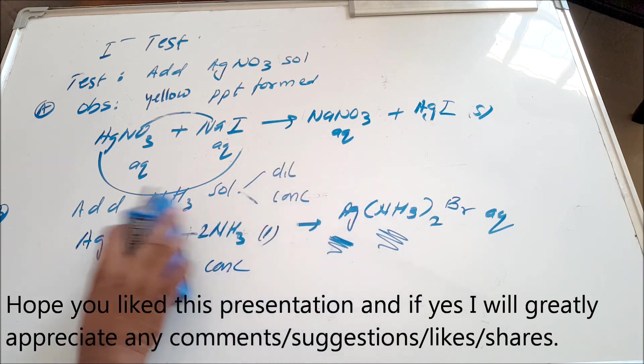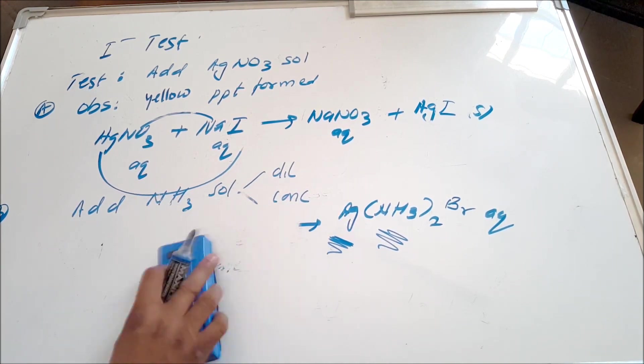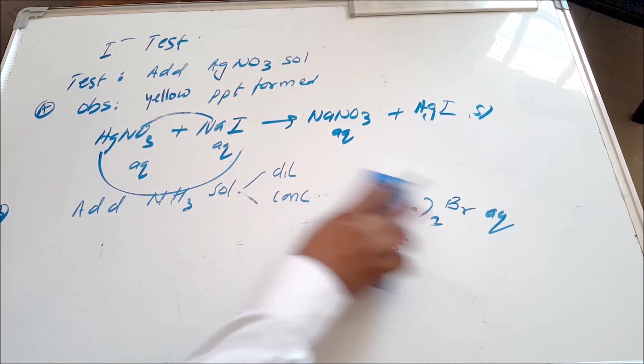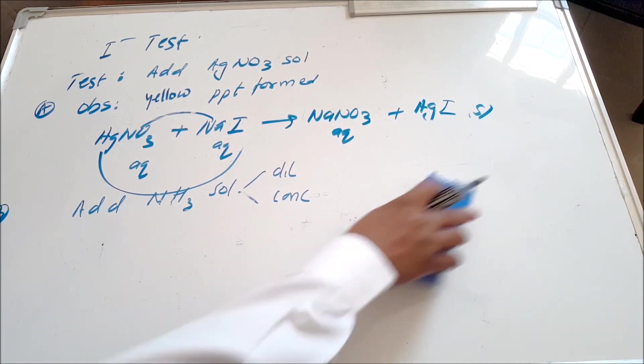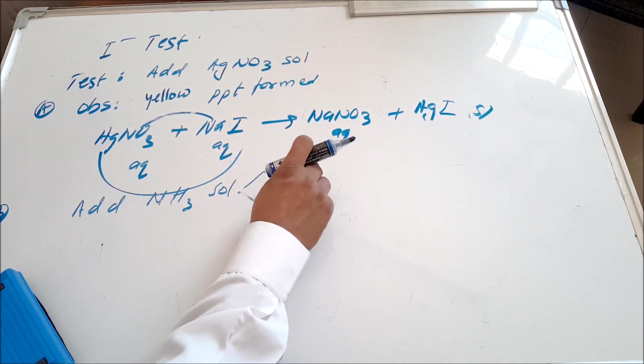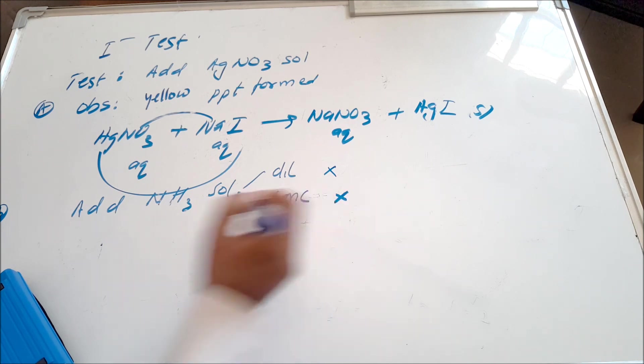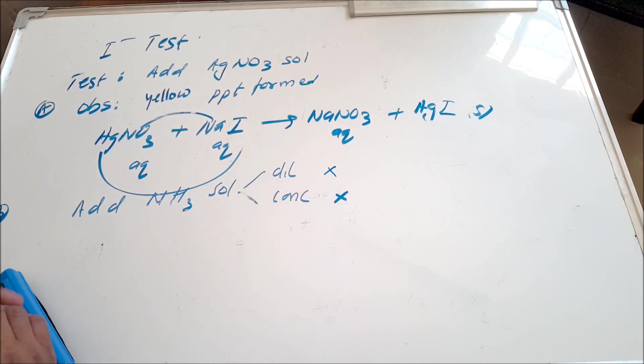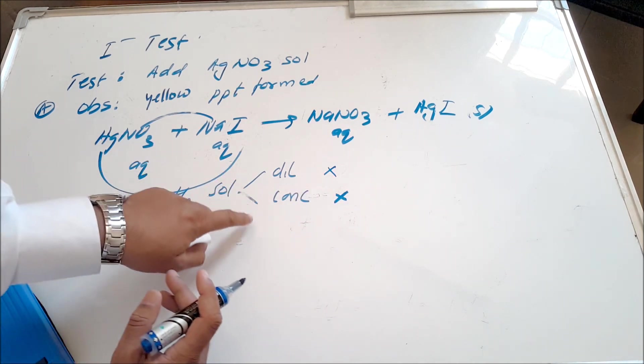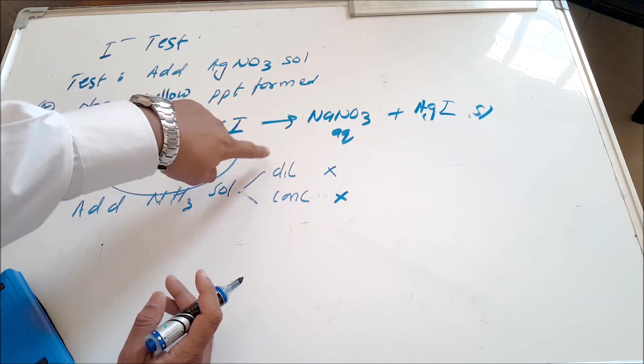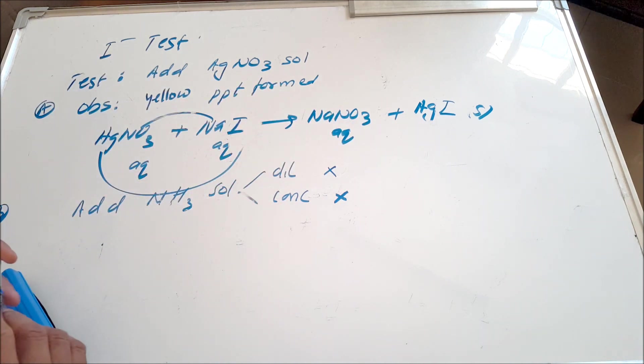And what happens is if I try to react that yellow precipitate with ammonia solution, even if I use concentrated ammonia or dilute ammonia, there is no further reaction. So that's how the iodide test differentiates. There is no reaction of that yellow precipitate with dilute ammonia and with concentrated ammonia. So that's basically what you have to memorize: the test for chloride, bromide, and iodide.